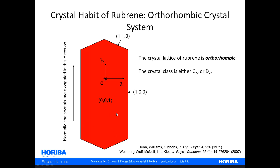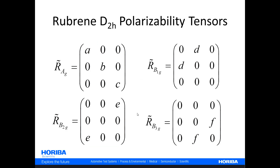Here you see a schematic of the crystal habit with respect to the crystal axes — keep this in mind as we proceed. For a crystal in the D2H crystal class, the Raman active modes are dictated by that crystal structure. In rubrene, there are four Raman active modes: AG, B1G, B2G, and B3G. These are the only Raman active modes in play.